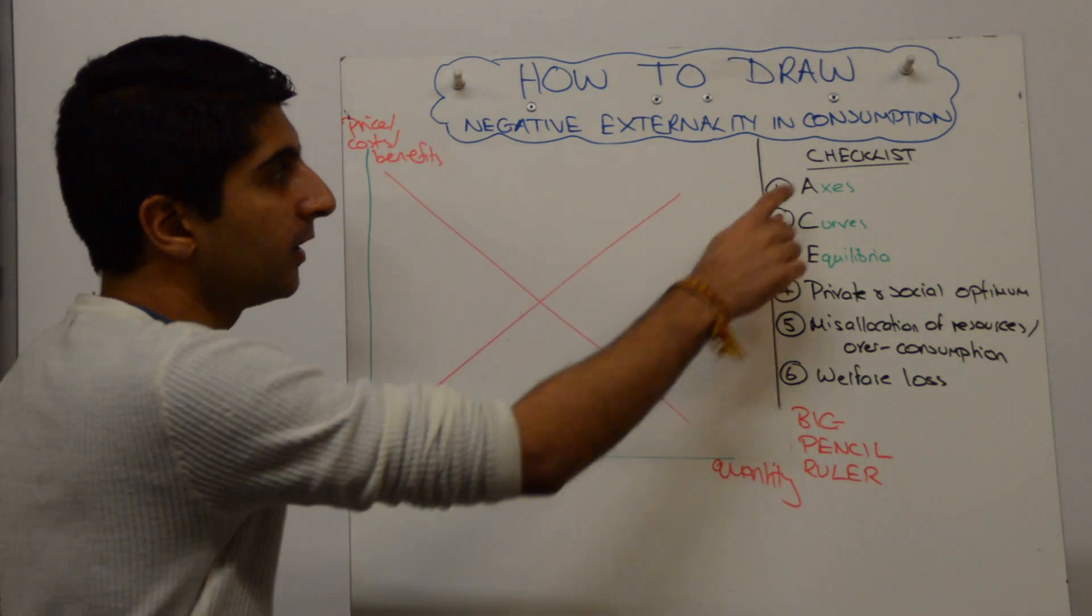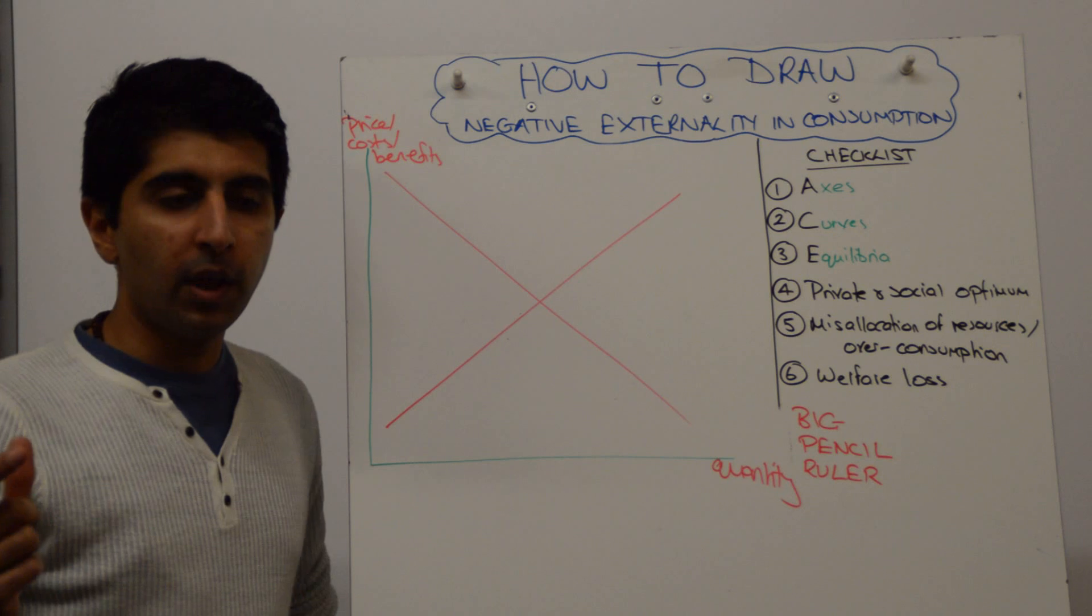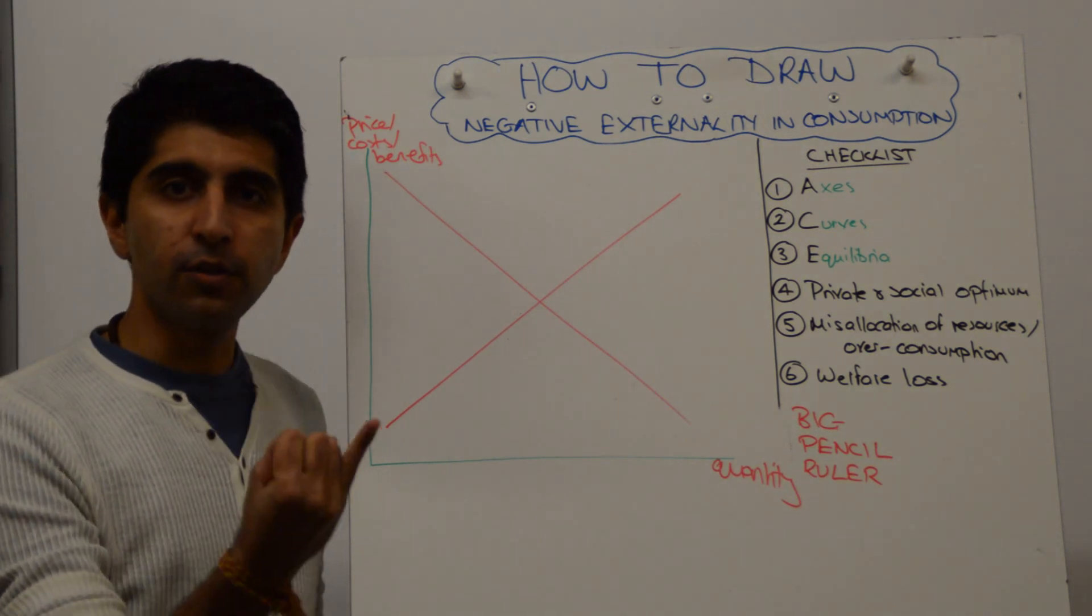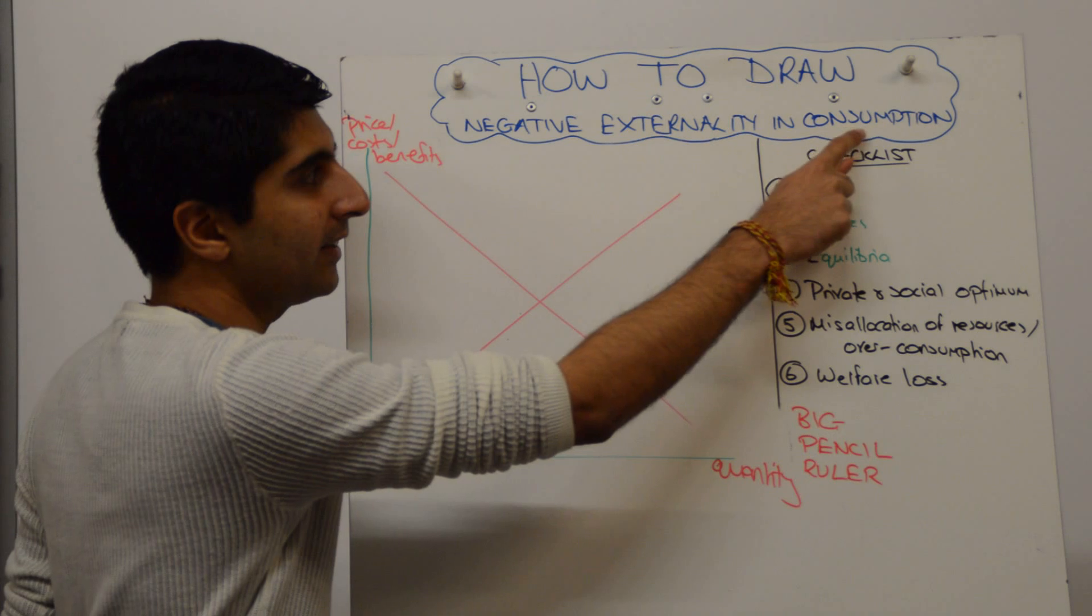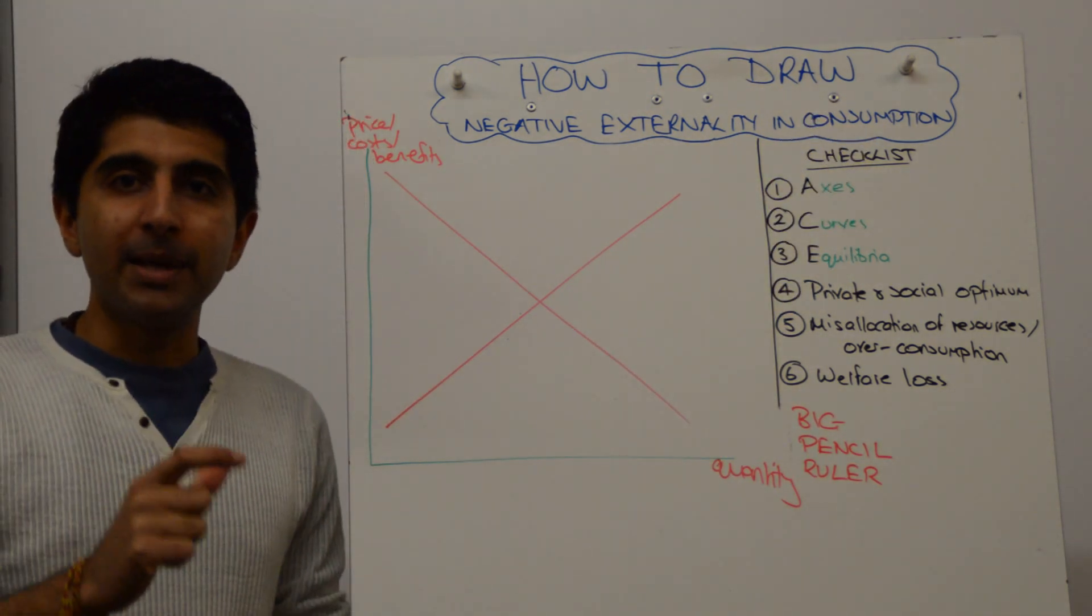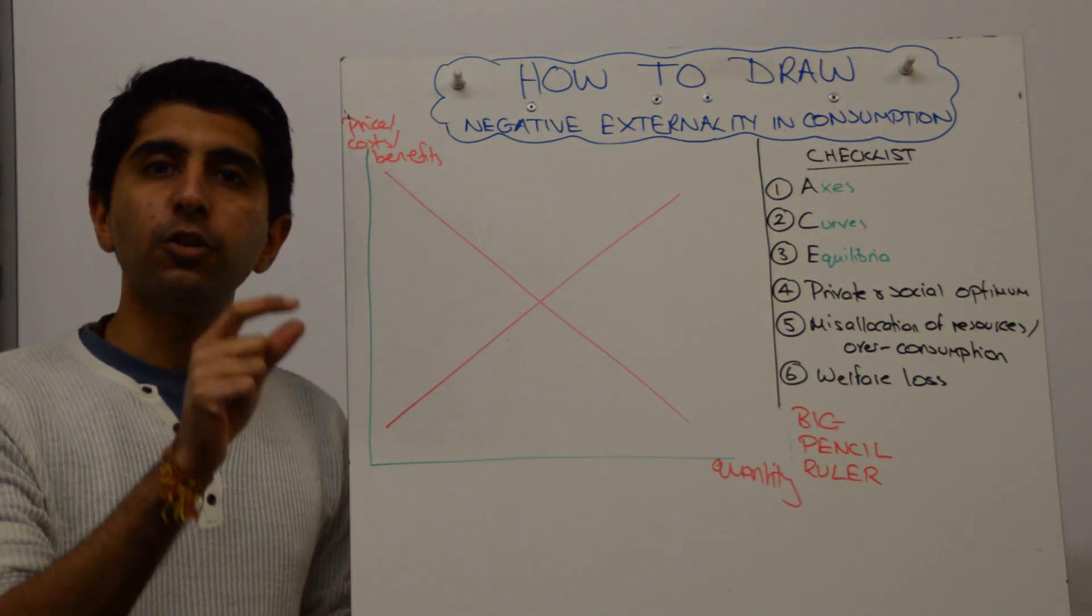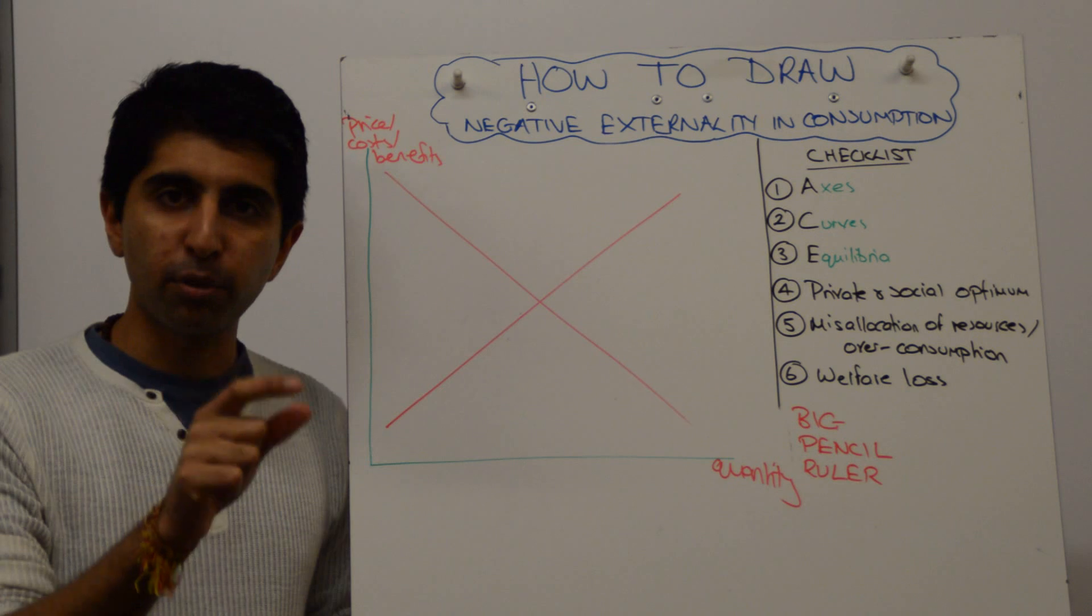The title tells us consumption here is very helpful. The costs curve relates to producers, the benefits curve relates to consumers. So if we have a negative externality in consumption, there is going to be discrepancy between the marginal social benefit and the marginal private benefit.